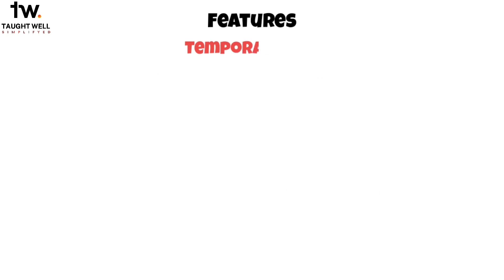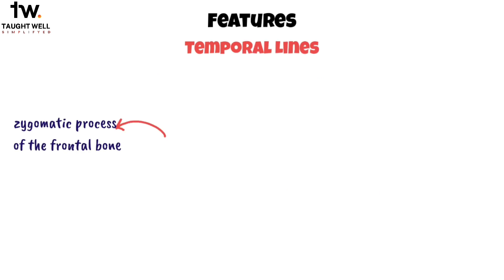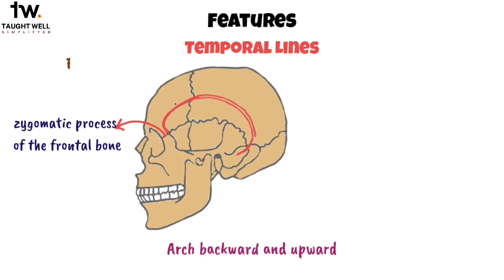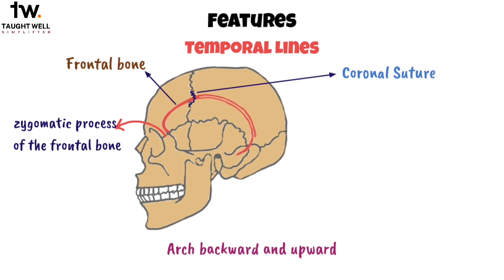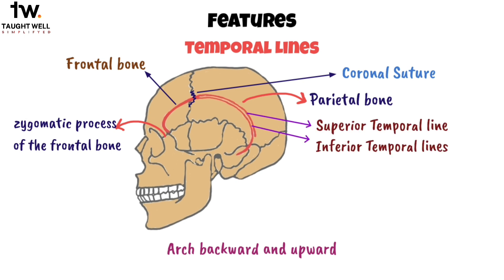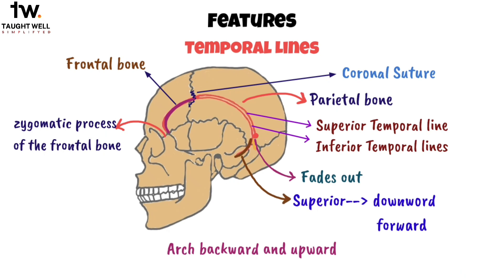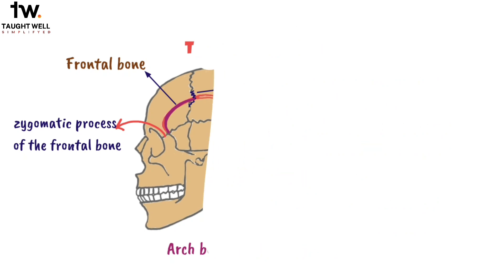The temporal lines start at the zygomatic process of the frontal bone and then arch backward and upward, crossing over the frontal bone, the coronal suture, and the parietal bone. Over the parietal bone, there are two lines — a superior and an inferior one. If you trace them forward, they eventually fuse into a single line. When traced backward, the superior line fades out over the posterior part of the parietal bone, while the inferior temporal line continues downward and forward. These named features provide us with valuable information about the various points and lines on the surface of the skull.